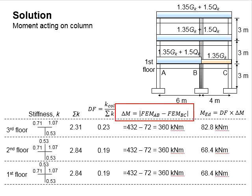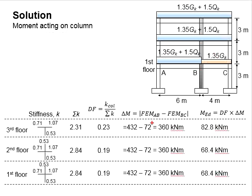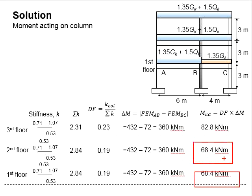As the third floor does not have an additional column, ΣK carries a larger portion of the distribution factors. Next, from the fixed end moment AB and BC, we determine the differences between the moments. The difference between the moments here will be equal to 360. The moment carried by the column is quantified by the percentage as indicated by the distribution factor. With that, the distribution factor is multiplied with the ΔM, you obtain 82.8, while 0.19 × 360 gives 68.4. The moment acting on the first floor and second floor will be the same.